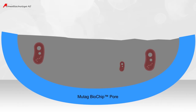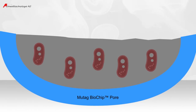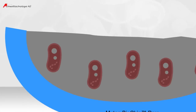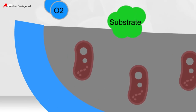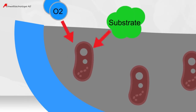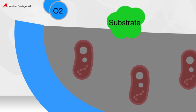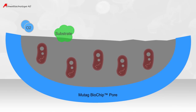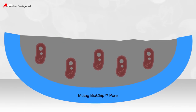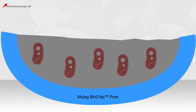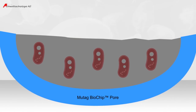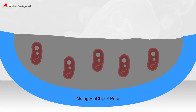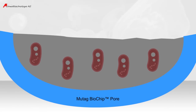What is essential for the microorganisms is a sufficient supply of the biomass with substrate, or more specifically nutrients contained in the water and oxygen in case of aerobic processes. It is crucial that the organisms in the pores can be sufficiently supplied and that no inactive biomass can emerge.